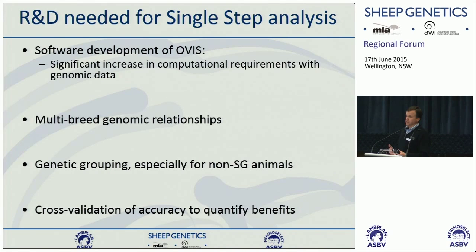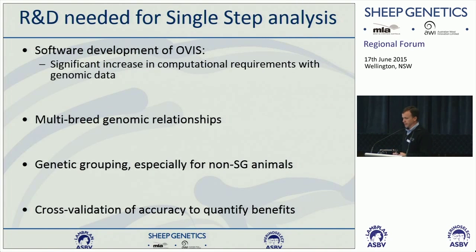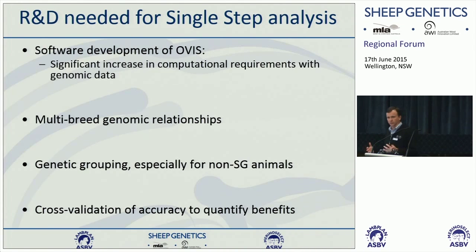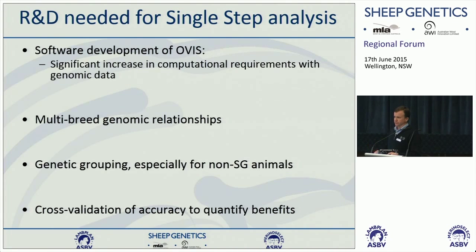There's more research and development ongoing for us to keep moving towards a single step analysis. A lot of software development for OVIS — the analytical software package behind the analysis — will see a huge increase in computational requirements. How we make use of relationships between different breeds at the genomic level, how to use genetic groups for animals we only know a DNA test for — there's a whole lot of work needed before we can roll out a full single step analysis across the industry.